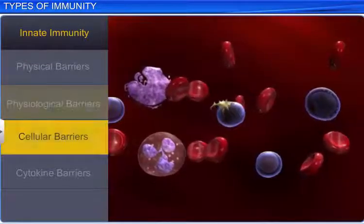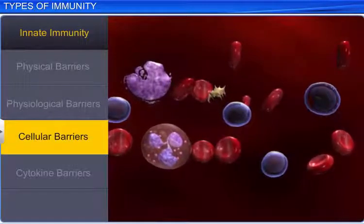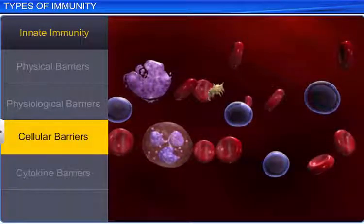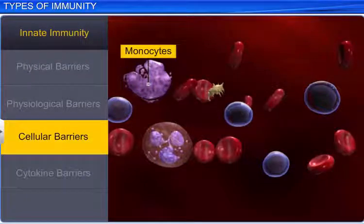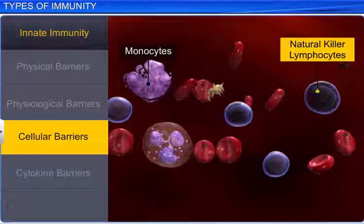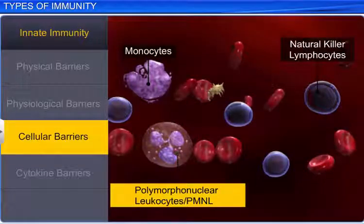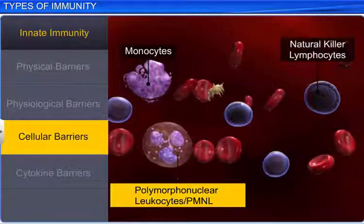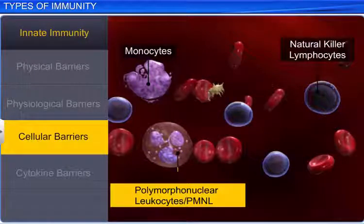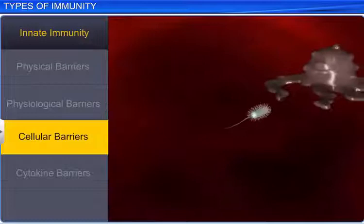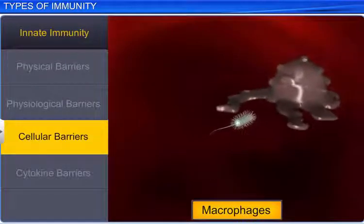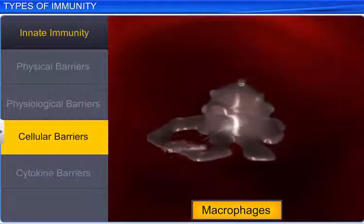Our body also has certain types of leukocytes, or white blood cells (WBCs), such as monocytes, natural killer lymphocytes, and polymorphonuclear leukocytes, also known as PMNL neutrophils, in the blood. Together, they constitute a cellular barrier, along with macrophages in the tissues. They can also destroy microbes.